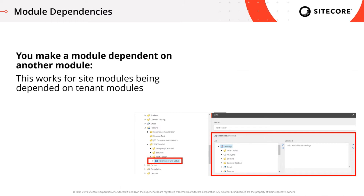Once you create a module — as seen in the text teaser example — you can make a module dependent on another module if it needs certain prerequisites. A few words on that: this works best if you make a site module dependent on a tenant module. You can't effectively make a site module dependent on another site module because all site modules will still appear in the site creation dialog even if one isn't installable. The ideal scenario is a tenant module that creates prerequisites, and then the site module depends on that tenant module.